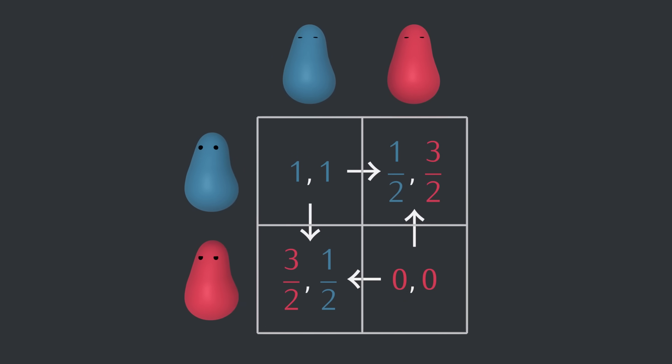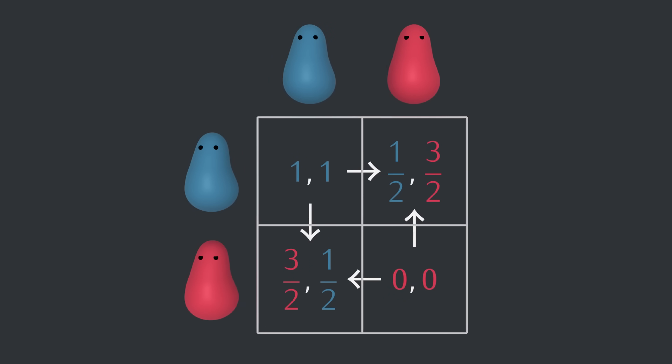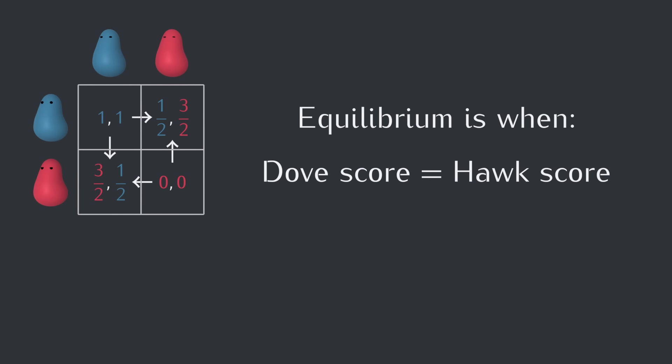Great. So we have the main conceptual point down, but we can deepen our understanding by calculating what that equilibrium fraction should be. The population will be in equilibrium if doves and hawks have the same expected average score in a contest.